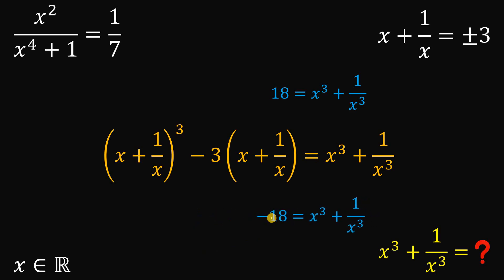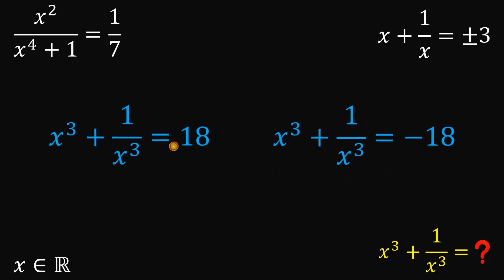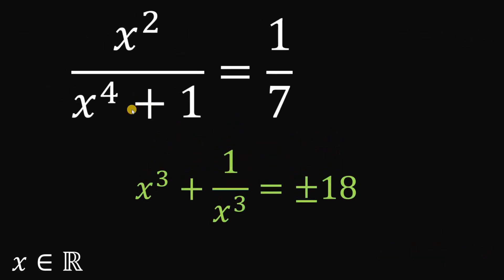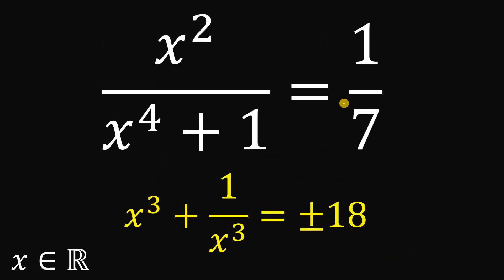Therefore, we have two possible values for x cubed plus one over x cubed: positive eighteen and negative eighteen, which we can write simply as positive or negative eighteen. So using the equation x squared over x to the fourth power plus one equals one over seven, the numerical value of x cubed plus one over x cubed must be equal to positive or negative eighteen. And as always, we are done.